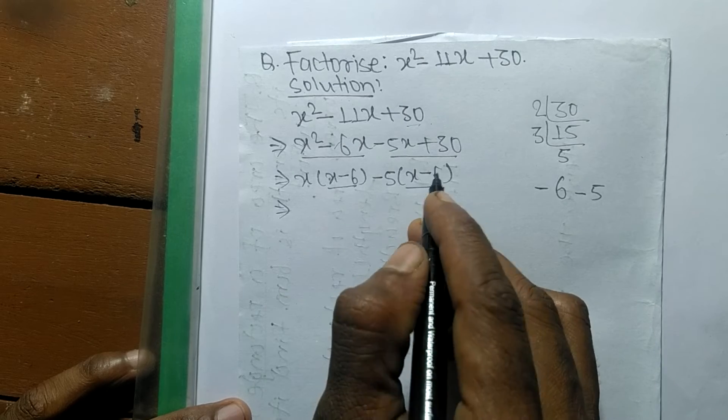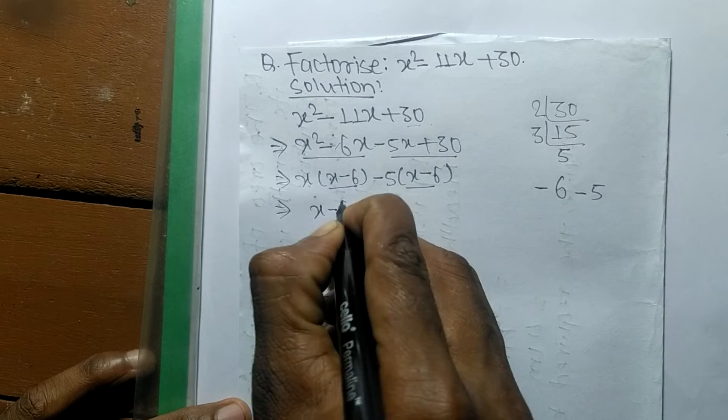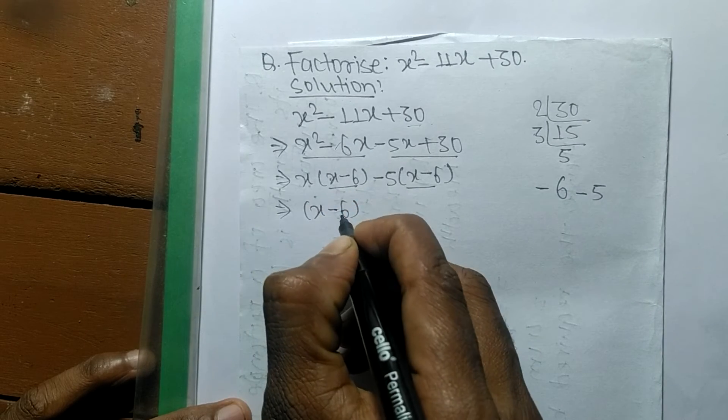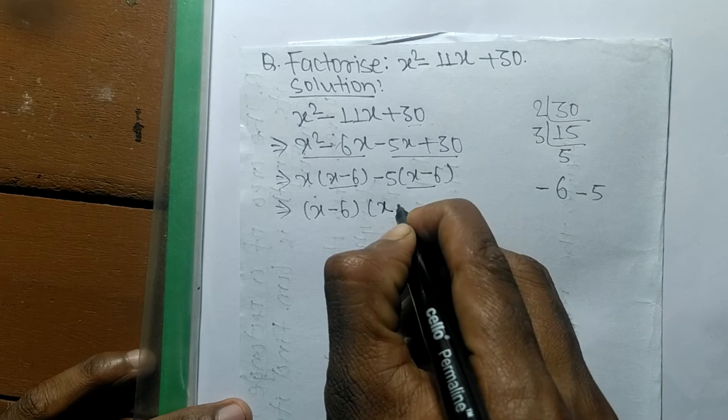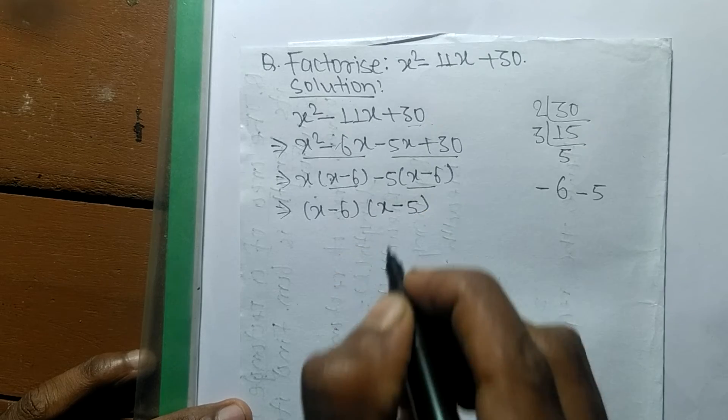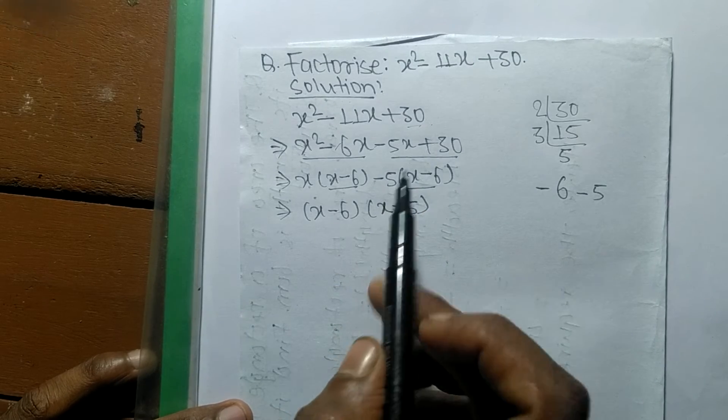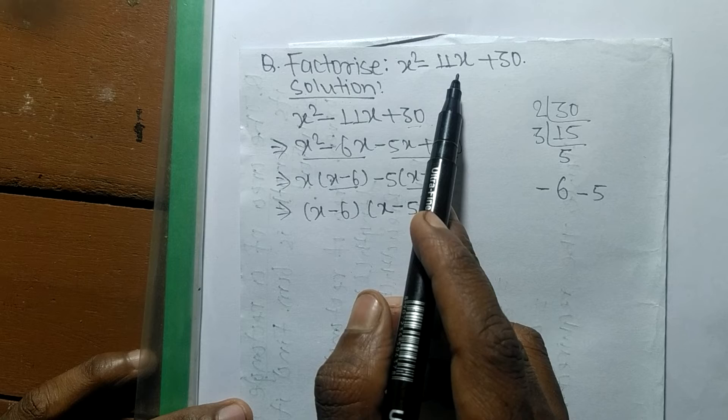Now we take x minus 6 as the common factor. In the first, the remaining is x. In the second, the remaining is minus 5. So the factors of x squared minus 11x plus 30 are (x minus 6) and (x minus 5).